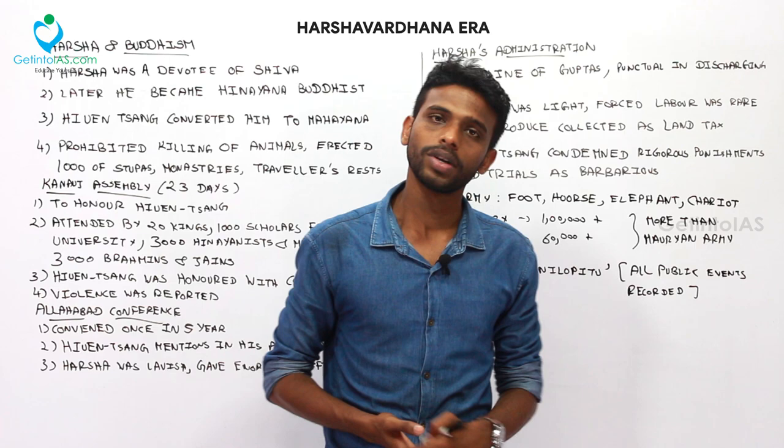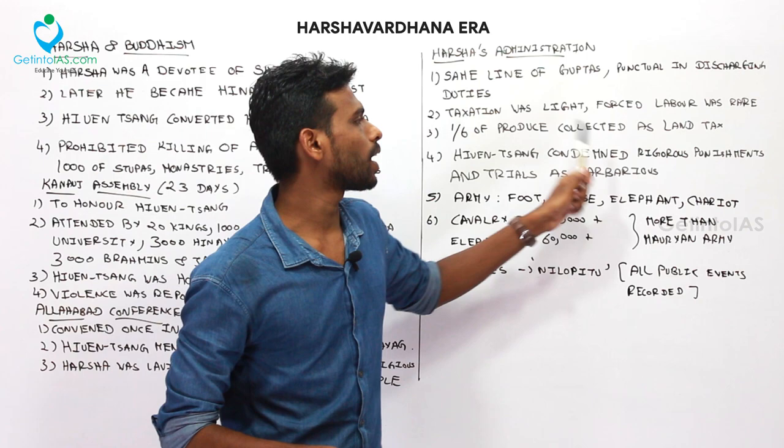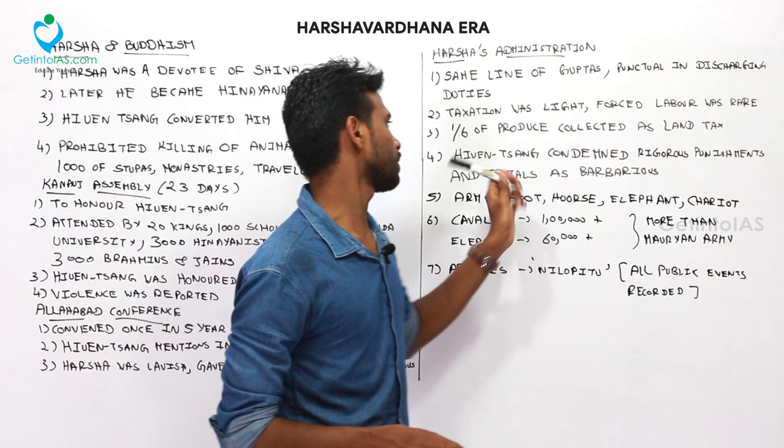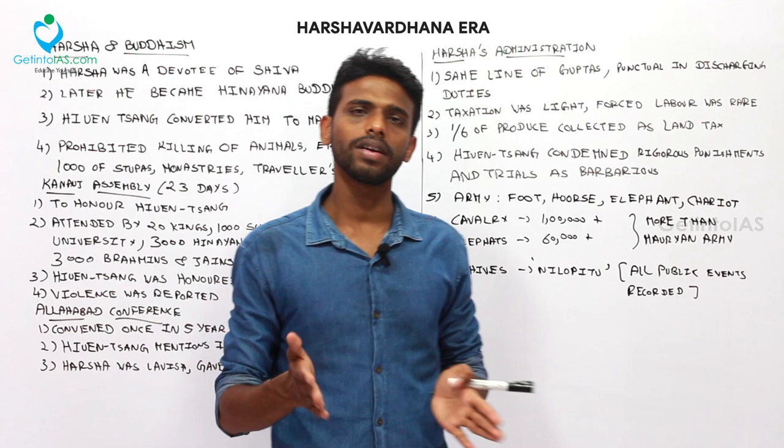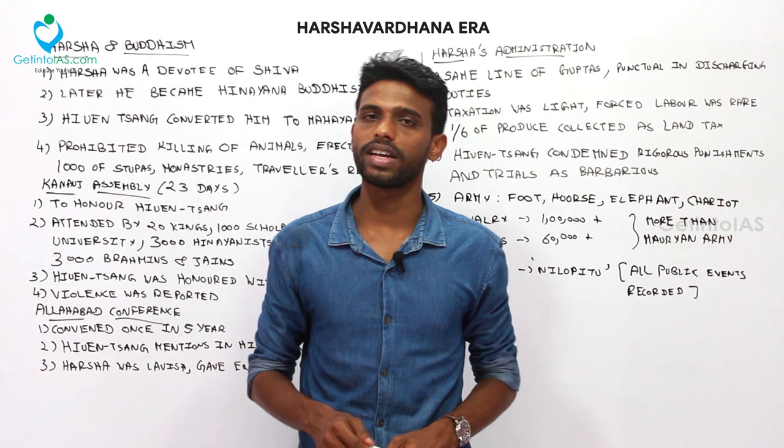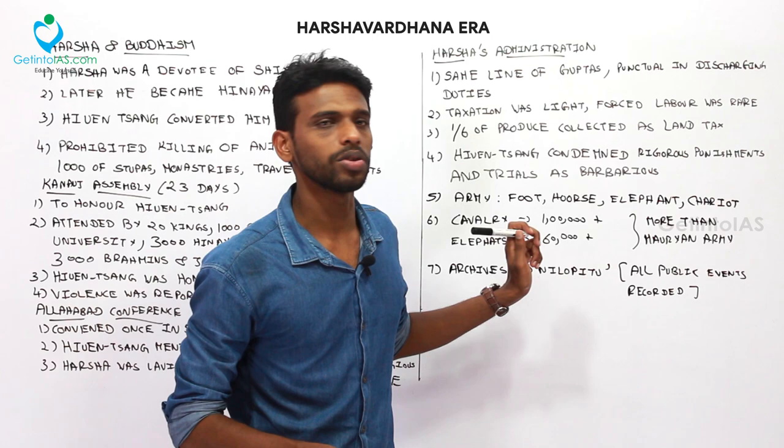One-sixth of the produce was collected as land tax, the same as the Mauryans and Guptas. However, Xuanzang condemned the rigorous punishment trials as barbarous. The trials and punishments for culprits were more rigorous than those under the Guptas, and Xuanzang specifically referred to them as barbarous.